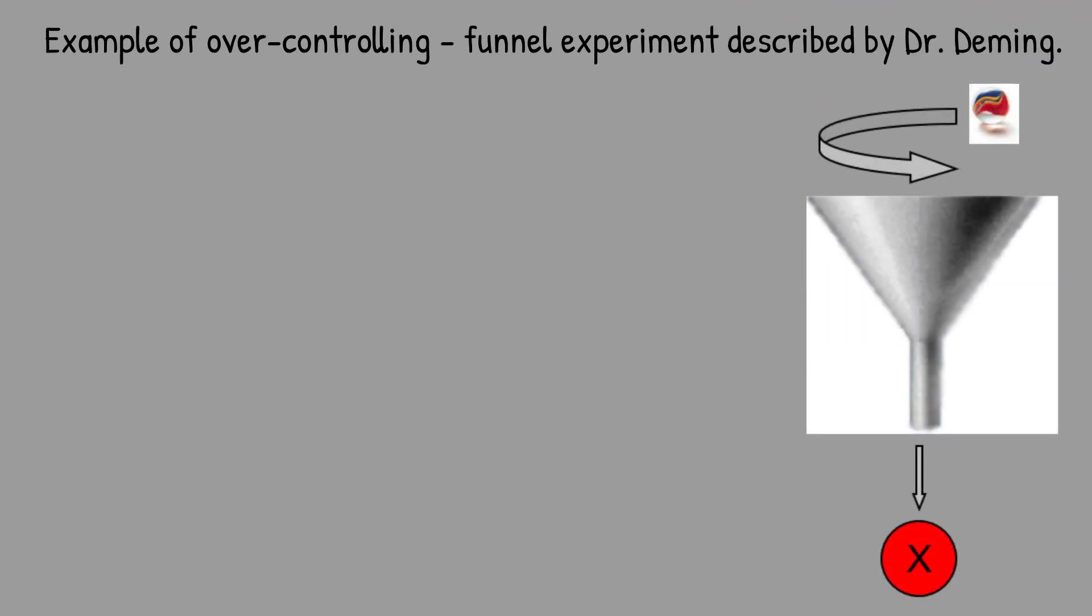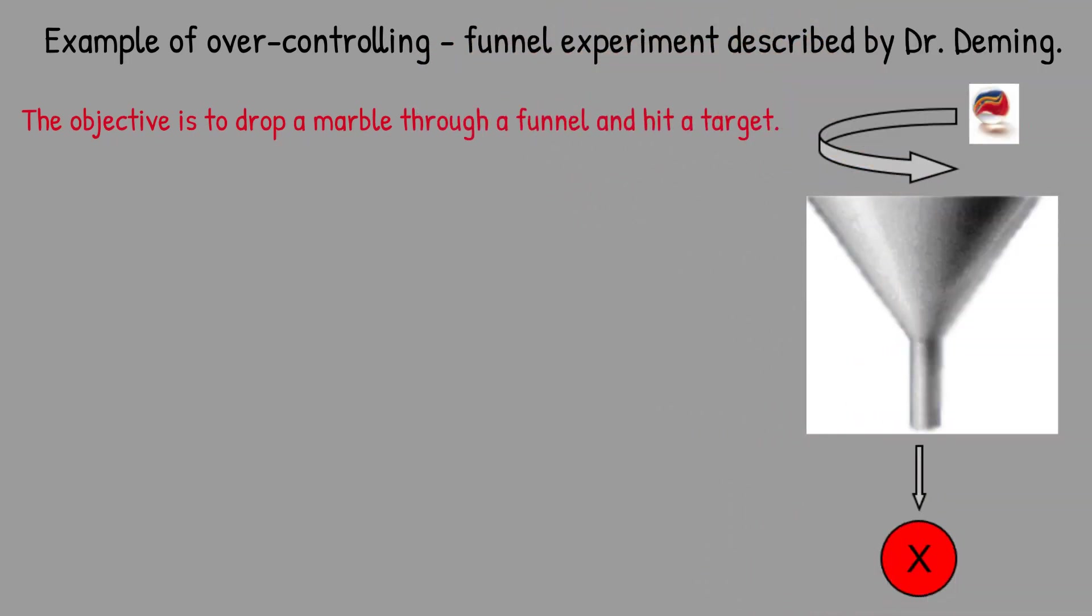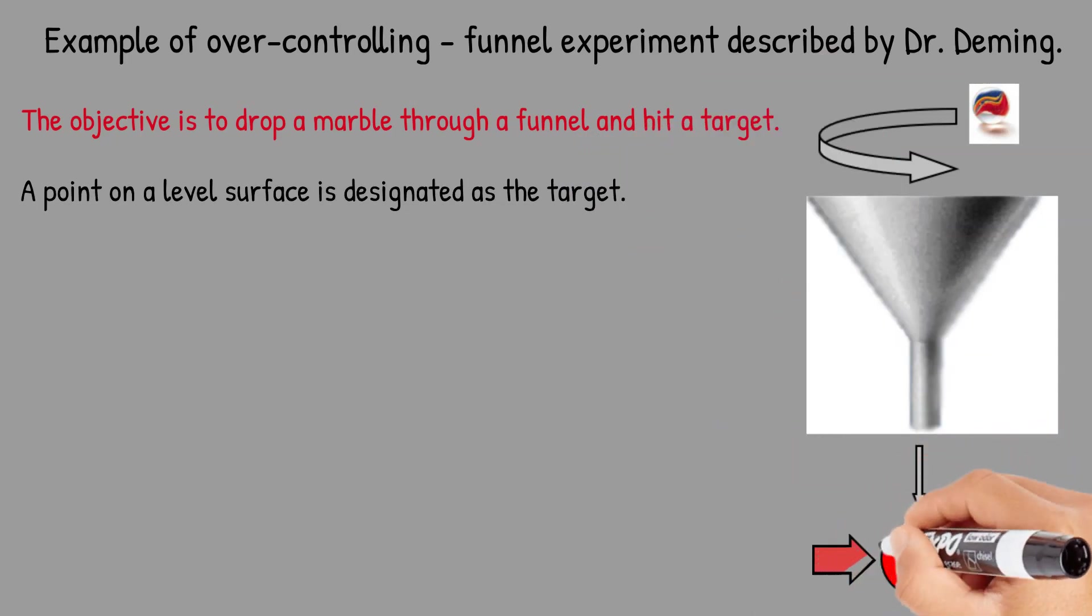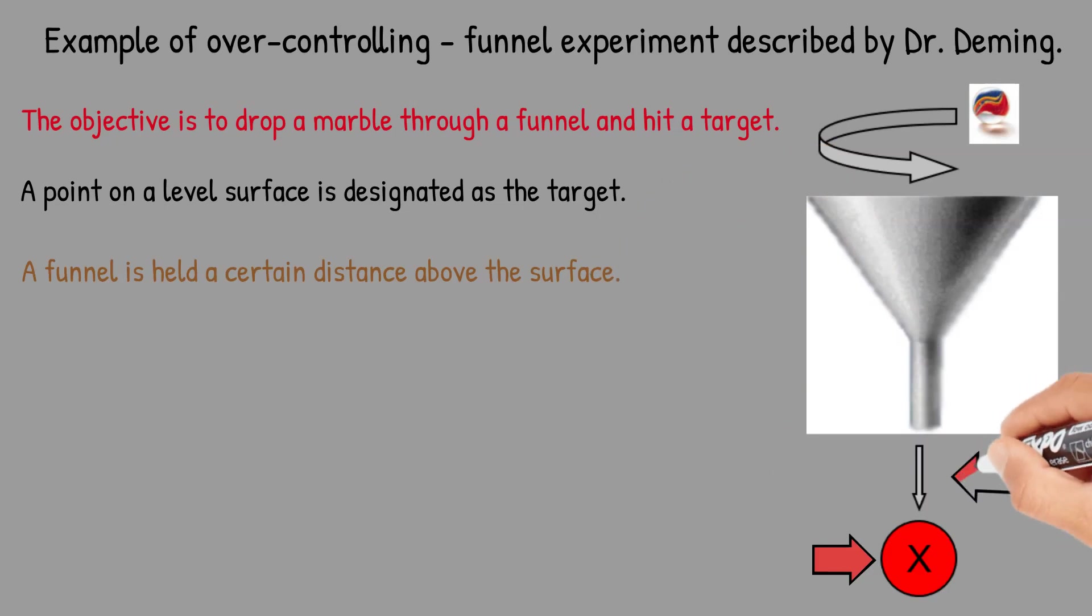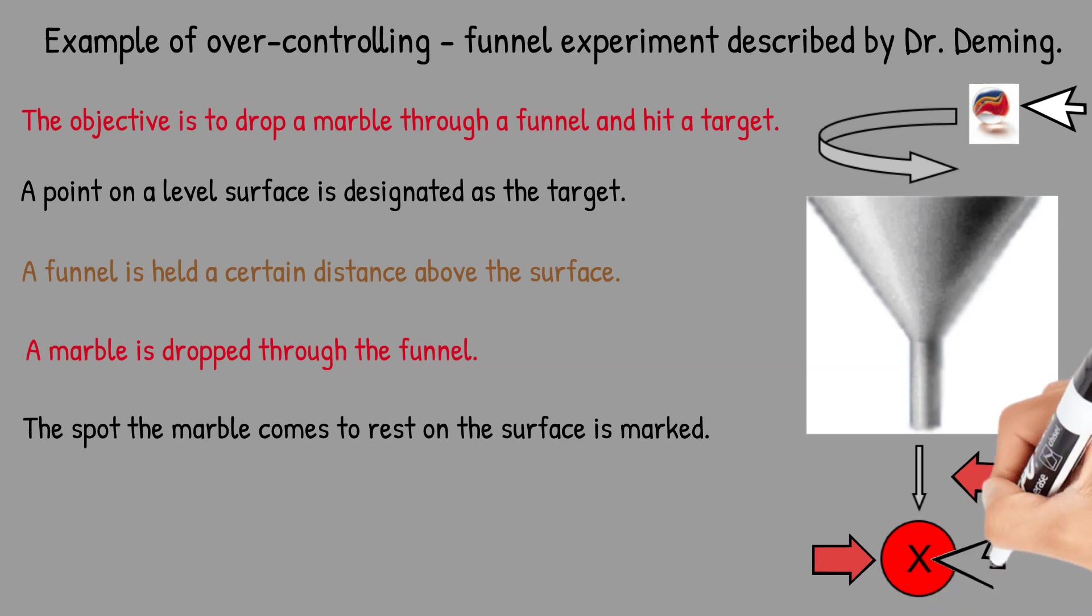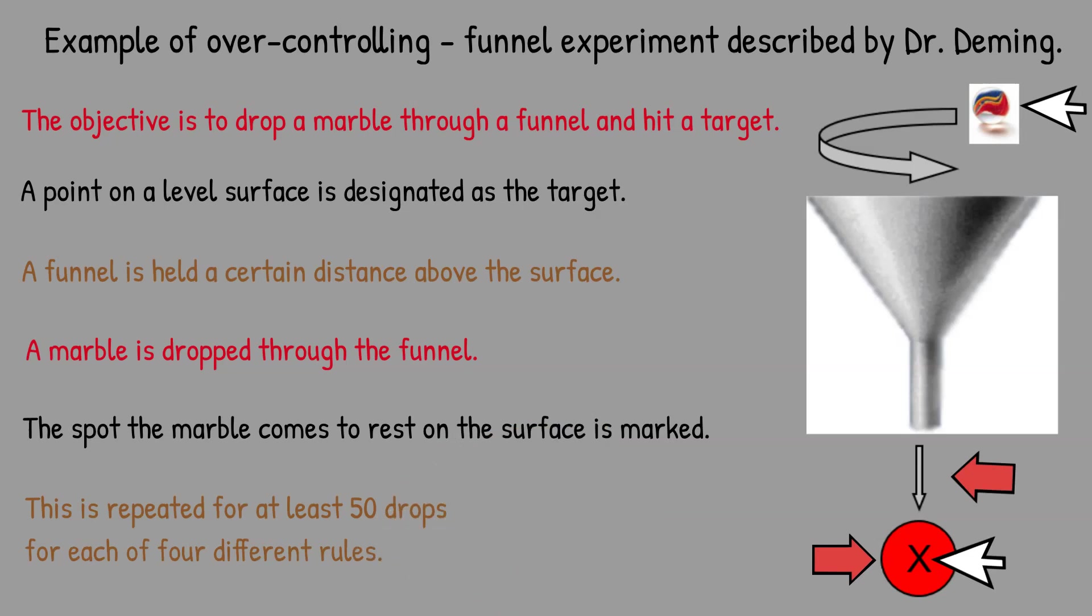So an example of over controlling the process is the funnel experiment described by Dr. Deming. The objective is to drop a marble through a funnel and hit a target. A point on a level surface is designated as a target and then the funnel is held a certain distance above the surface and you drop a marble through the funnel and then you're going to mark where it ends up on the surface wherever it comes to rest you post mark. This is repeated at least 50 drops for each of four different rules. So let's take a look at the four rules.